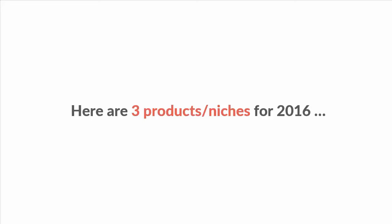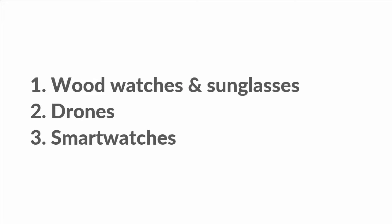As I promised at the beginning, I said I'd give you three product and niche ideas that you can sell in 2016 or right now if you wanted to. Here they are: wood watches and wood sunglasses — that's actually two niches, but you could combine them into your own unique wood watch and sunglass store. Another one is drones, and finally smartwatches.